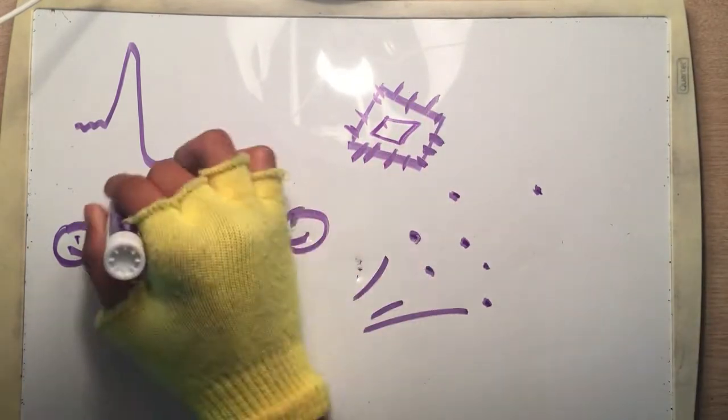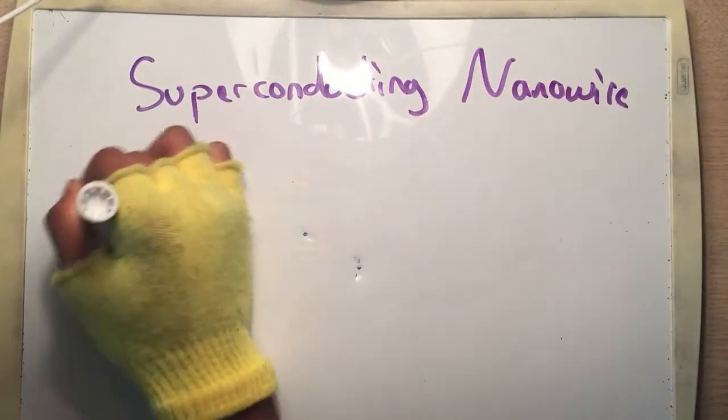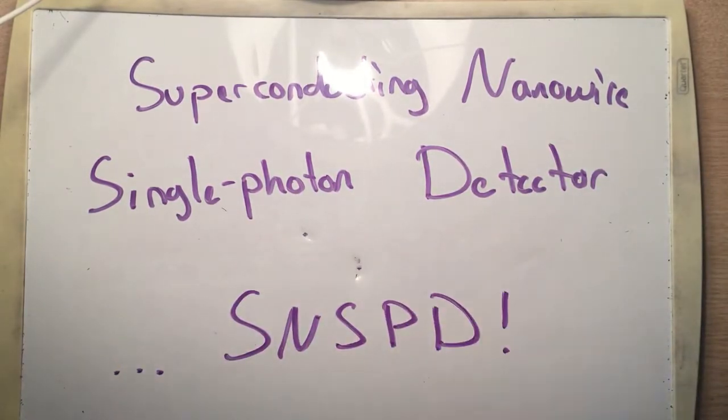In this video, we will be discussing a very special type of single photon detector called the superconducting nanowire single photon detector, or for our convenience sake, we will call it the SNSPD.